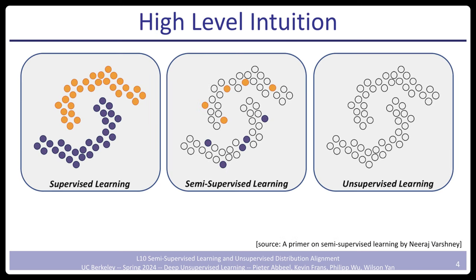Semi-supervised learning: this picture explains the problem setting pretty well. Supervised learning, on the left, is where you're given data points and classification labels and find the decision boundary — this is called a two-half-moon configuration. On the far right, unsupervised learning: you have no labels, but you might recover that there are two clusters. In the middle, semi-supervised learning is something in between: most of your data has no labels, but some data has labels.